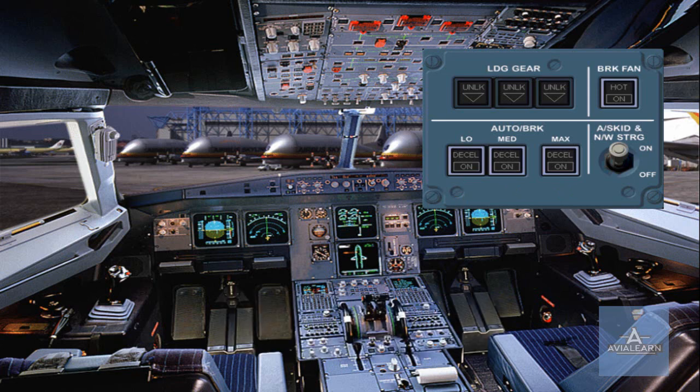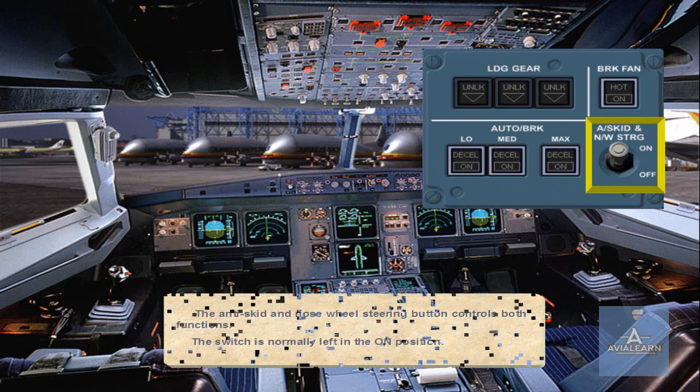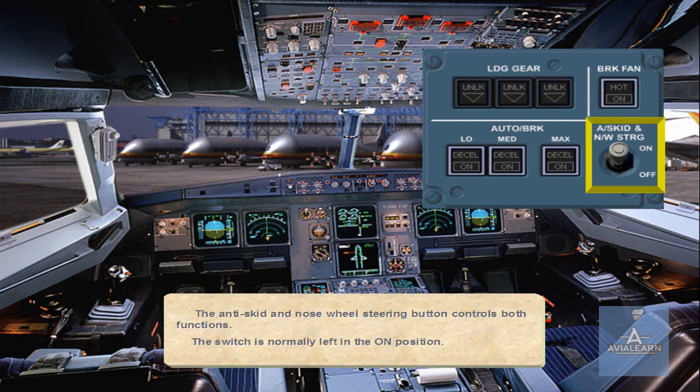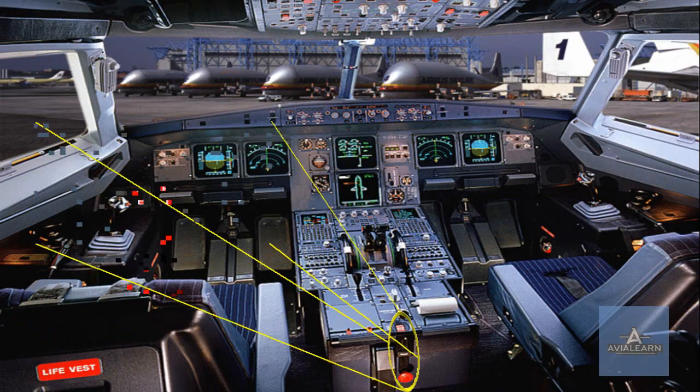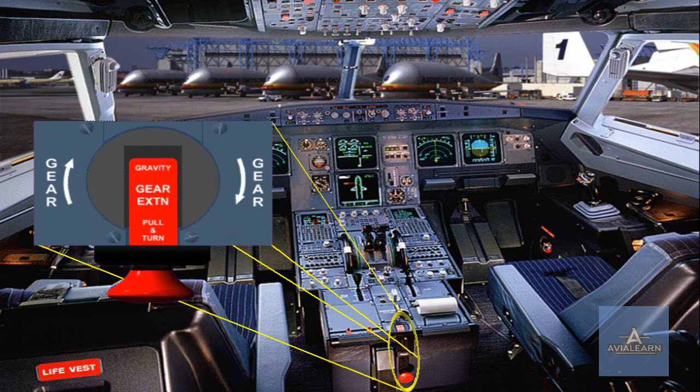The anti-skid and nose wheel steering button controls both functions; the switch is normally left in the on position. The landing gear gravity extension handle is located on the centre pedestal. This will be discussed further in the abnormal operation modules.